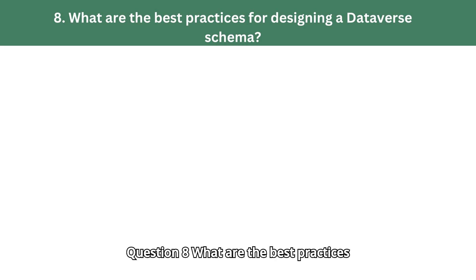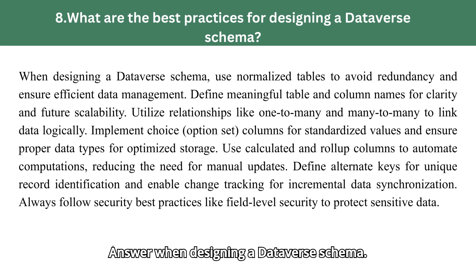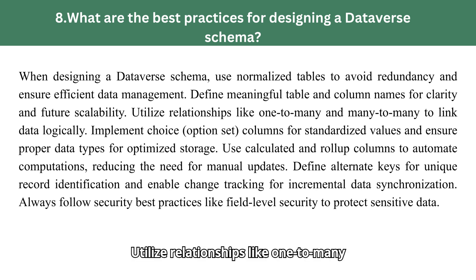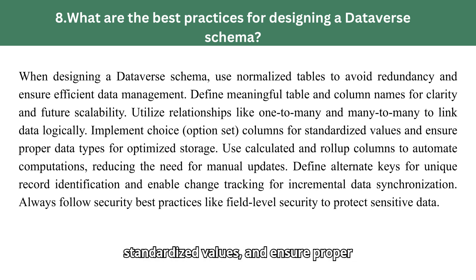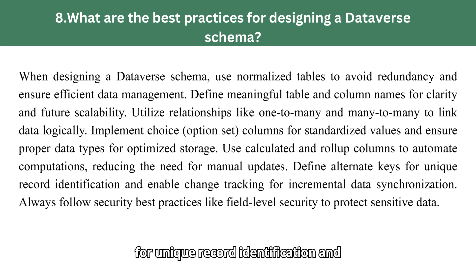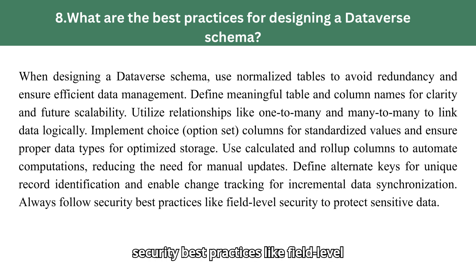Question 8: What are the best practices for designing a Dataverse schema? Use normalized tables to avoid redundancy and ensure efficient data management. Define meaningful table and column names for clarity and future scalability. Utilize relationships like one-to-many and many-to-many to link data logically. Implement choice (option set) columns for standardized values and ensure proper data types for optimized storage. Use calculated and roll-up columns to automate computations, reducing the need for manual updates. Define alternate keys for unique record identification and enable change tracking for incremental data synchronization. Always follow security best practices like field-level security to protect sensitive data.